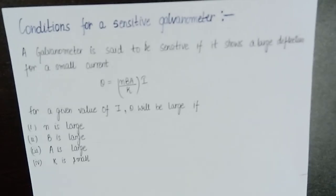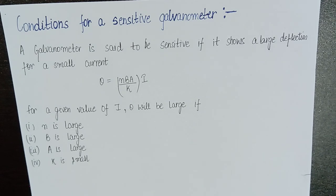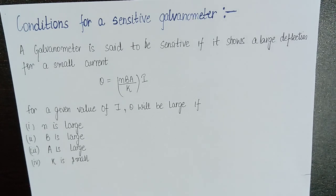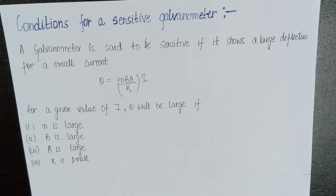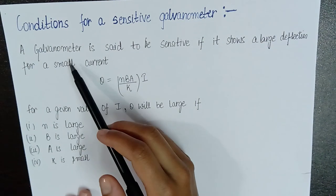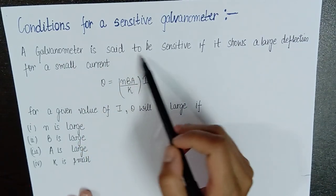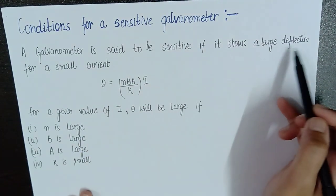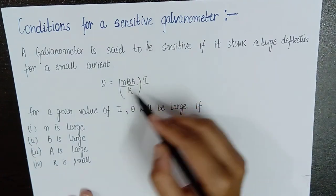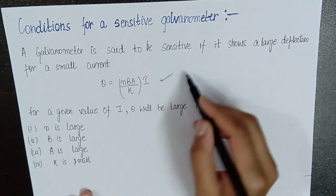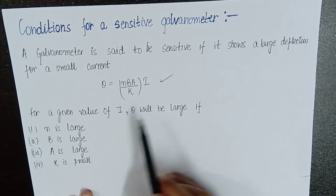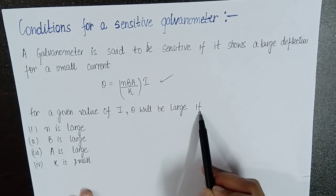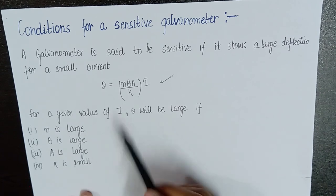Now, finally, we want our galvanometer to be sensitive. Sensitive means that we detect small to small current with a measurable amount of deflection. So, what are the conditions? If we want our galvanometer to be sensitive, that is, it should show a large deflection for a small value of current. So, what can we do for a given value of I? If we want to increase the deflection, we can do this by increasing the number of turns.